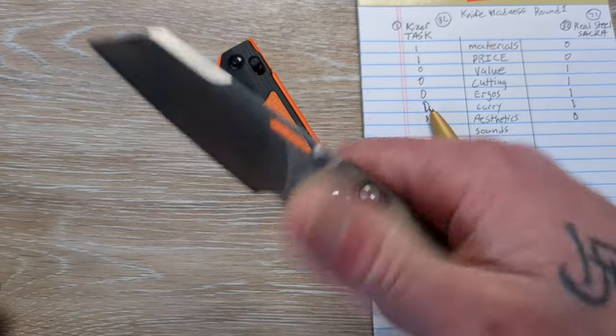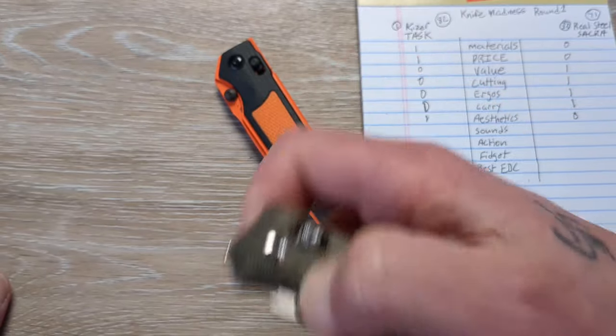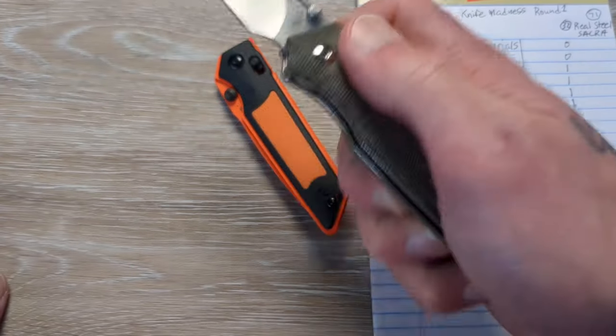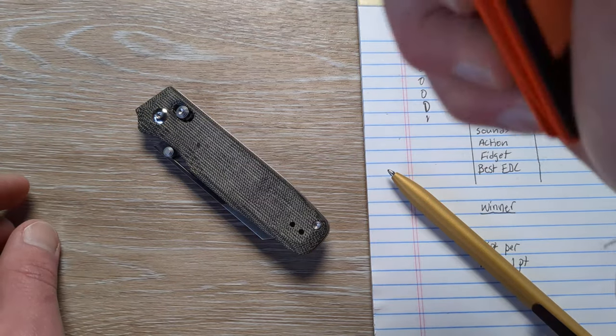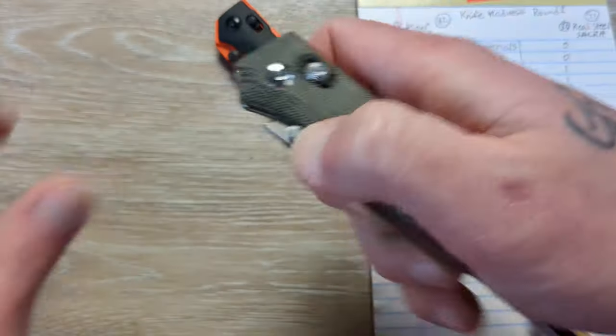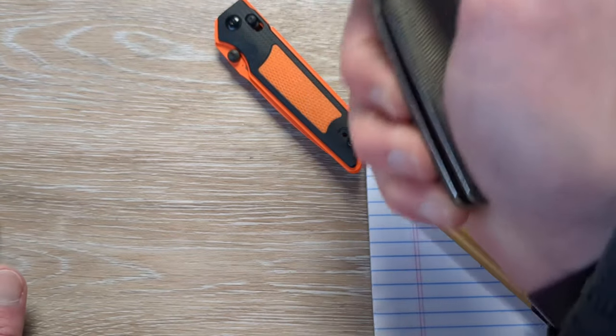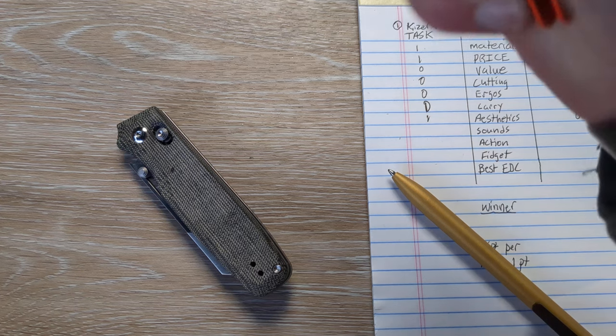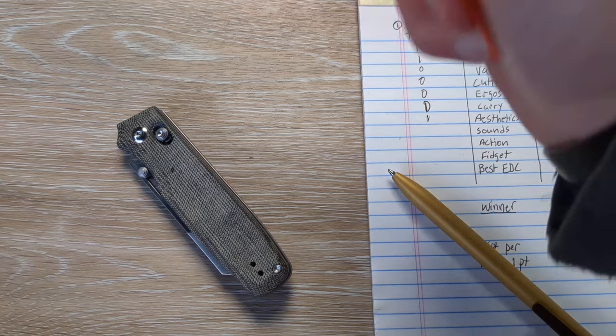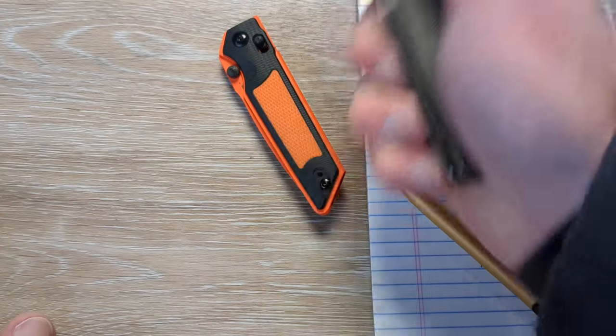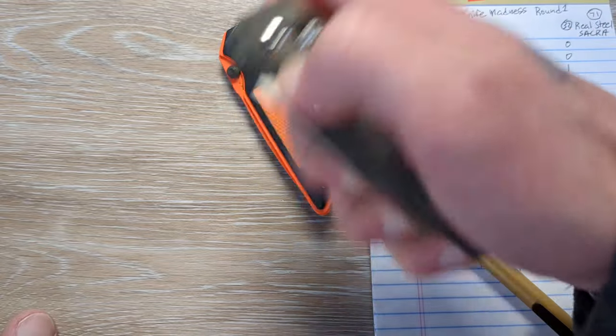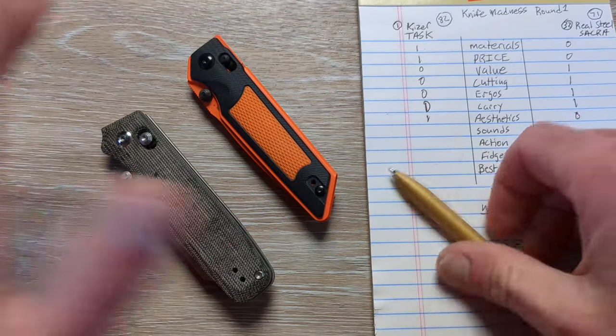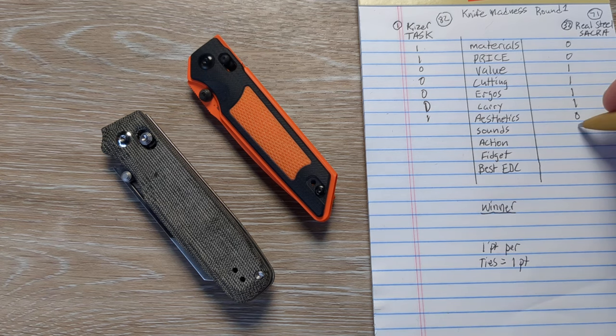So we're going into sounds. And we have a 4 to 3 lead for the Sakra. I think the Sakra will take this. I don't know if it's that integral frame. But it's got a louder open and a more solid close. I mean, this thwacks out. But it sounds kind of just like every other crossbar lock. Where this really hits hard. So we're going to go with the Sakra. So we'll give the edge there to the Sakra.